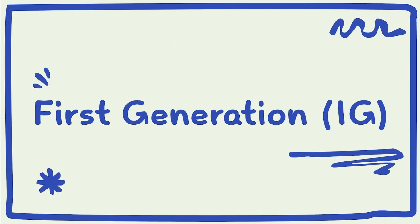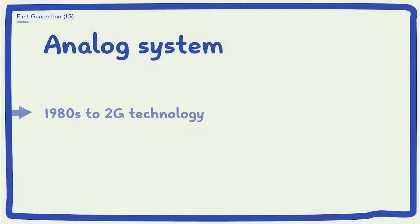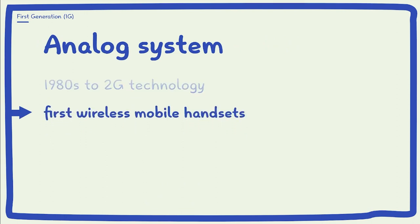The first generation of wireless telephone technology known as 1G was an analog telecommunication standard that was introduced in the 1980s, and continued until the invention of 2G technology. 1G technology was preceded by mobile radio telephones.